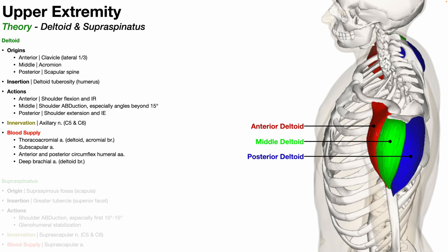The deltoid itself is a convergent muscle. If we look at the origin, counting all three functional regions, the origin is very broad. As you go distally, the muscle converges into a single tendon, which inserts on the deltoid tuberosity.